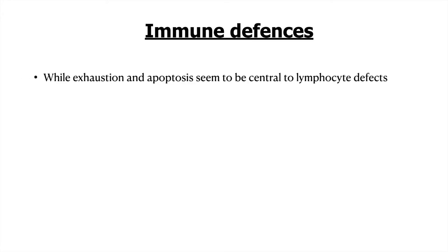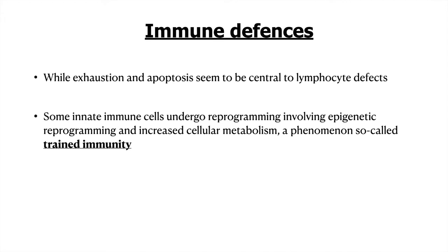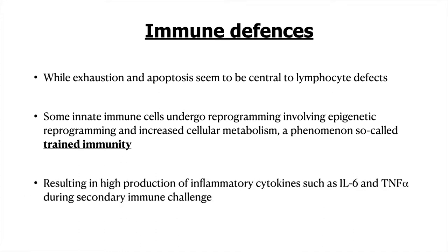While exhaustion and apoptosis seem central to lymphocyte defects, there are other genetic factors such as epigenetic reprogramming, increased cellular metabolism, and so-called trained immunity, which result in impairment of immune defense. This leads to high production of inflammatory cytokines like IL-6 and TNF-alpha during secondary immune challenge.